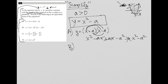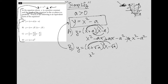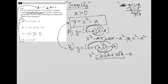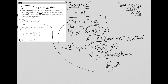Choice B asks: is y equals (x plus square root of a)(x minus square root of a) equivalent to y equals x squared minus a? Using FOIL: x times x is x squared, x times negative square root a is minus x square root a, square root a times x is positive x square root a, and square root a times negative square root a is minus a — because any square root multiplied by itself removes the radical. The middle terms cancel, leaving x squared minus a. That matches exactly, so the correct answer is choice B.